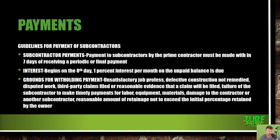Grounds for withholding subcontractor payment include: unsatisfactory job progress, defective construction not remediated, disputed work, third-party claims filed or reasonable evidence a claim will be filed, failure of the sub to make timely payments for labor, equipment, or materials, damage to the contractor or another subcontractor, and retainage in a reasonable amount not to exceed the initial percentage retained by the owner.